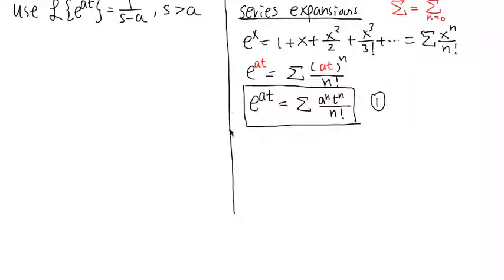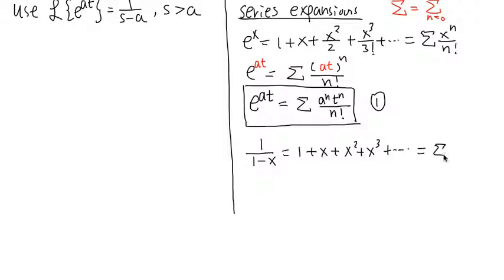The second tool is the series for 1 over 1 minus x: this equals 1 plus x plus x squared plus x to the third power, and so on — in sigma notation, sigma x to the n power. This is a geometric series, and the condition for it to work is that the absolute value of x must be strictly less than 1.